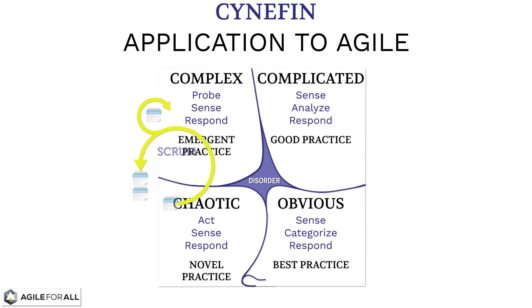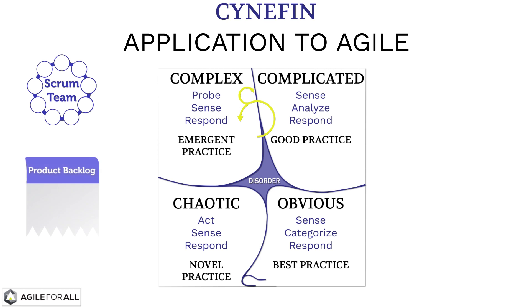Scrum treats the product development problem as if it is complex. We get a cross-functional group together. We add constraints to the system by prioritizing and thinly slicing the most important work to do first. This constrained amount of work is developed during a safe-to-fail experiment called a sprint. We execute the sprint as if it may be complicated work, doing expert analysis through product backlog refinement and sprint planning to create the plan. We then oscillate between the complicated and complex domains during the sprint, planning the next day's work and then sensing whether the plan still makes sense during the daily scrum meeting, changing the plan as appropriate.